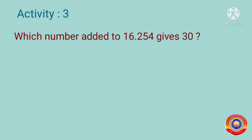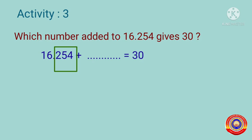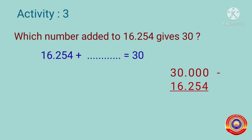Which number added to 16.254 gives 30? That means 16.254 plus blank equals 30. For finding the answer we have to subtract 16.254 from 30. There are three decimal places in 16.254, and we can subtract only if both numbers are decimals. So write 30 as a decimal number by putting a decimal point and three zeros after it — 30 becomes 30.000.